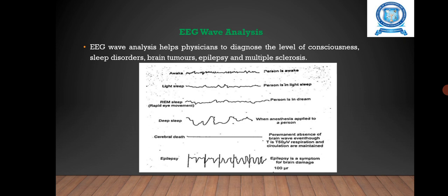Then we are going to see EEG wave analysis. The analysis helps physicians to diagnose the level of consciousness, sleep disorders, brain tumors, and epilepsy. Waves on the surface of the brain may have amplitudes as large as 10 microvolt. The frequencies of brain waves range from 0.5 to 100 Hz. The different levels of consciousness are also shown in the waveform.